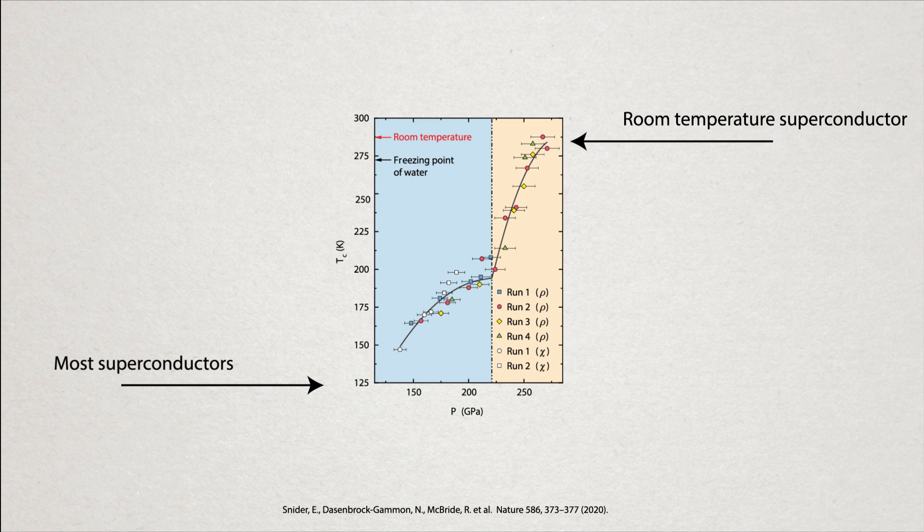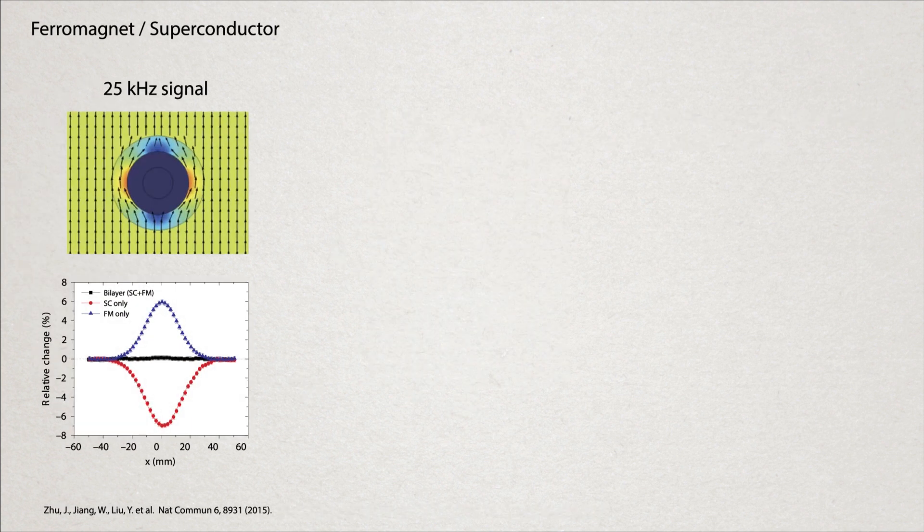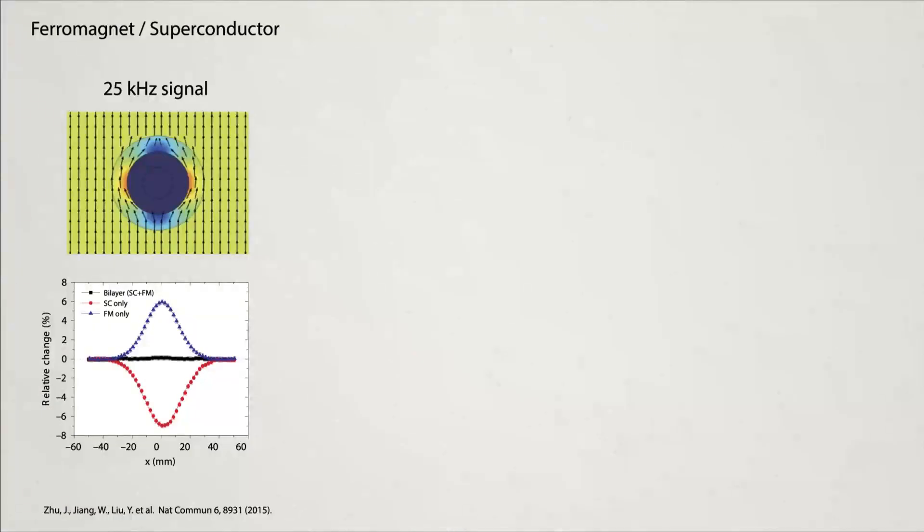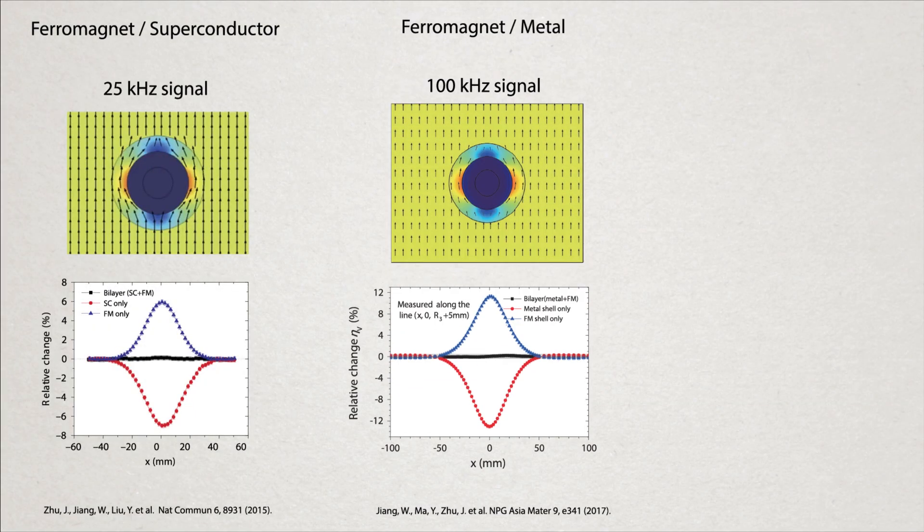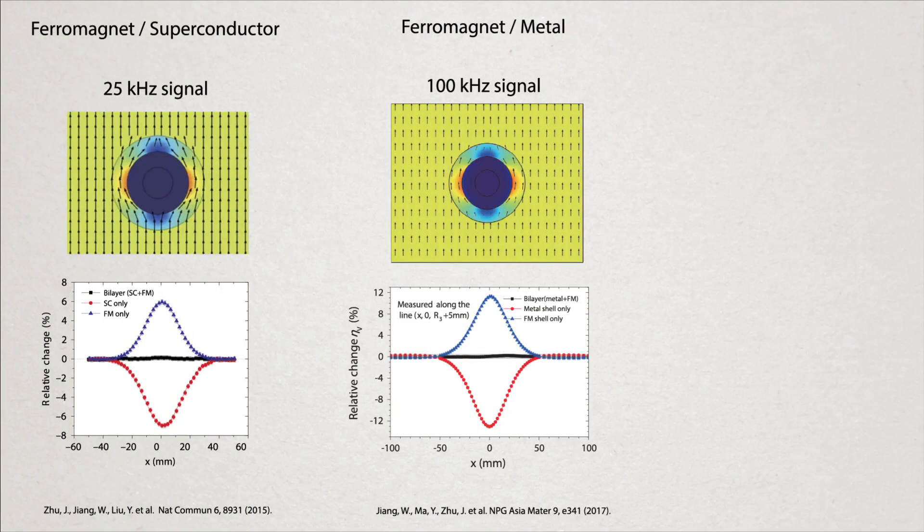Well it turns out that you can actually use metals rather than superconductors for certain types of magnetic fields. For oscillating fields that exist within certain frequency ranges, these metals can be just as effective as a superconductor, and they work at room temperature.